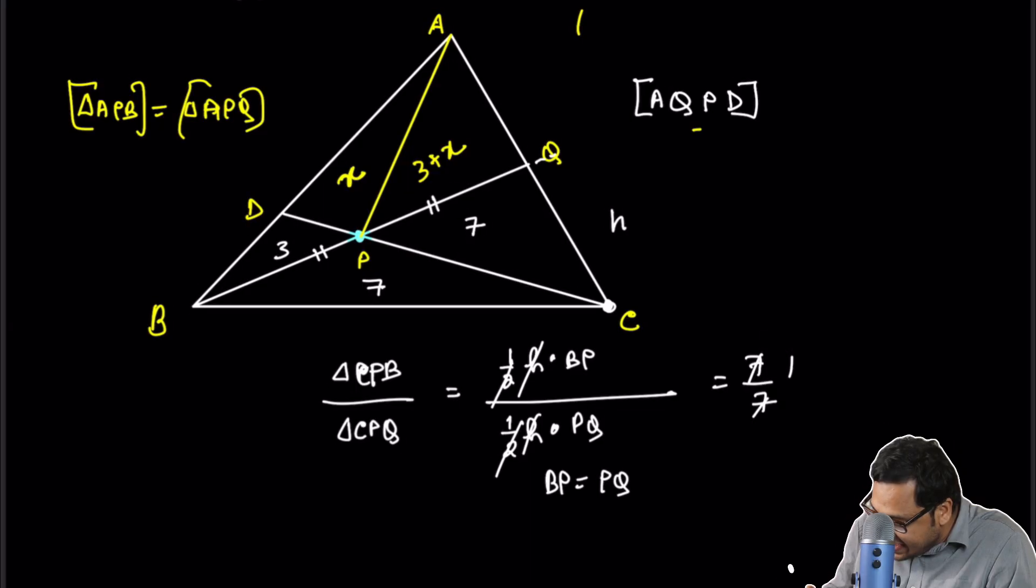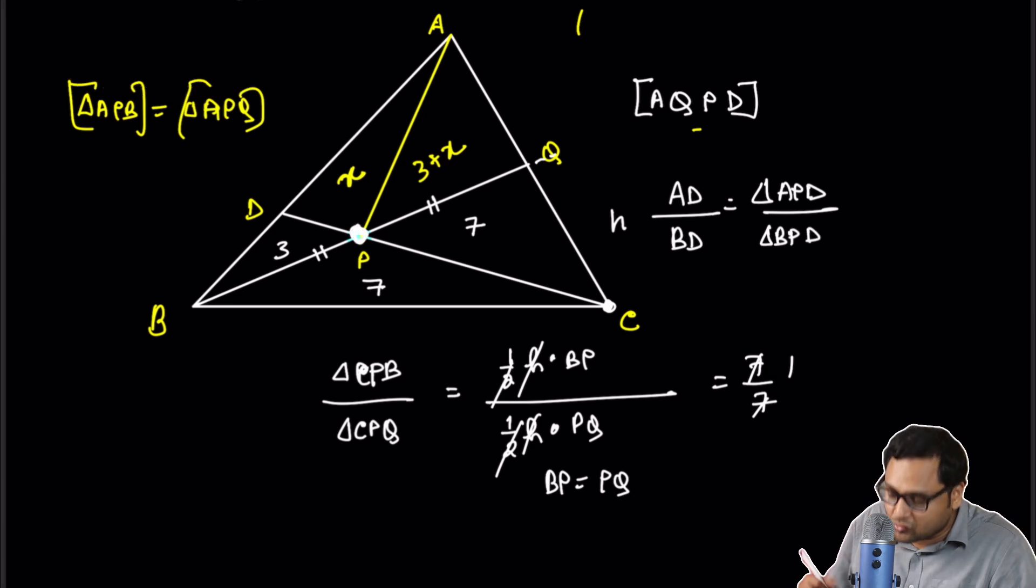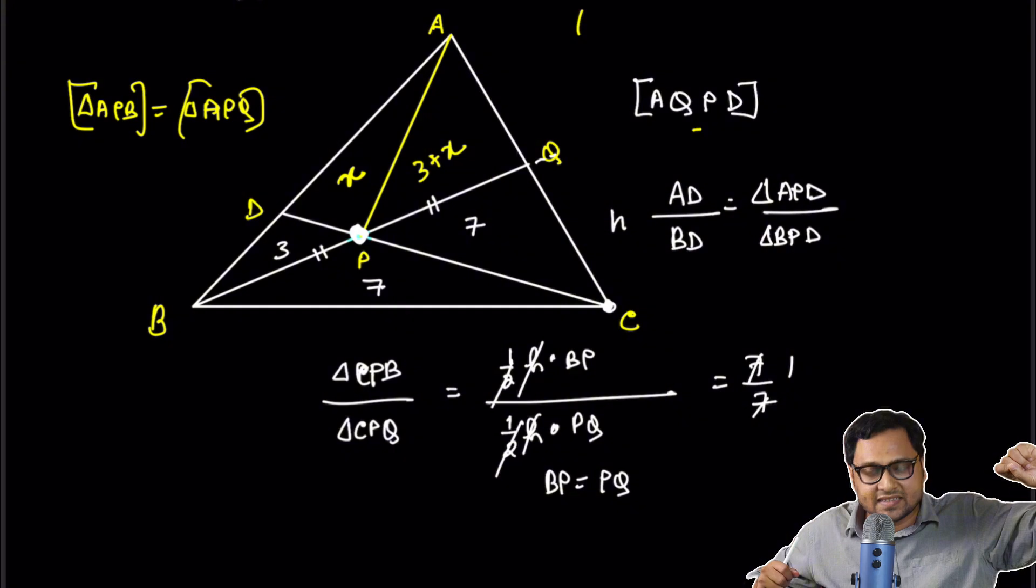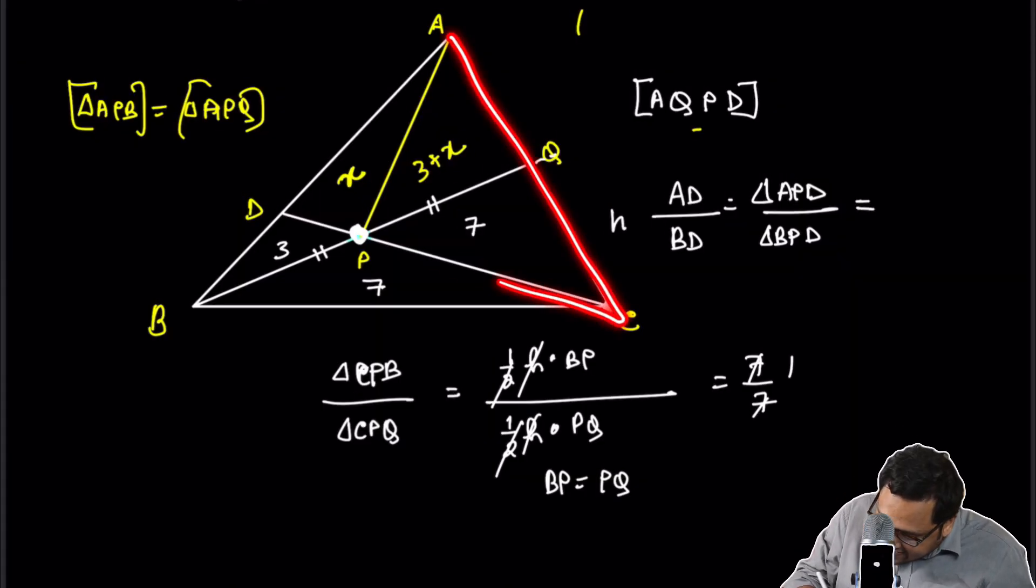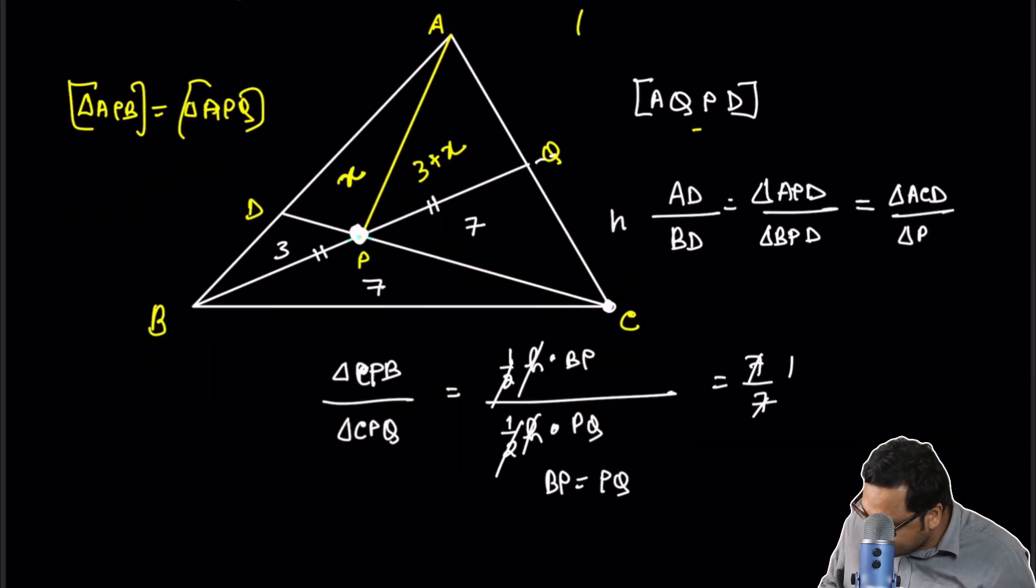We know that AD over BD is equal to triangle APD over triangle BPD. Again, the same principle, two triangles coming out from the same vertex. So their heights must be same. This is actually equal to triangle ACD by BCD. By triangle BCD.